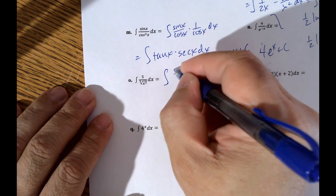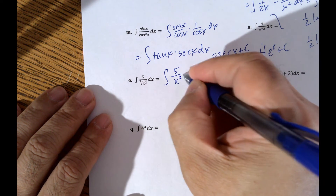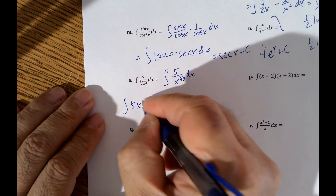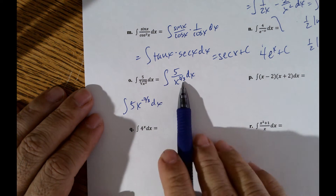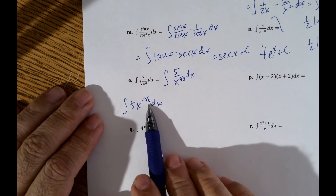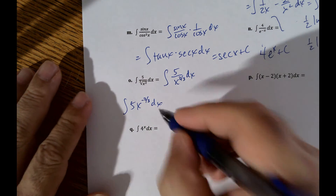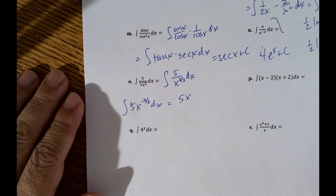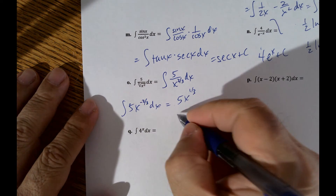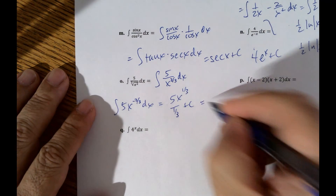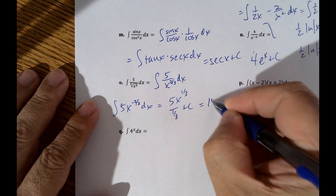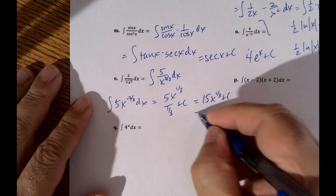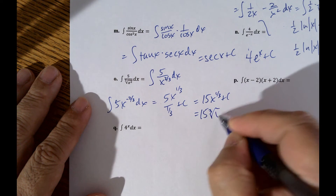Example o: rewrite 5 over x to the 2 thirds as 5x to the negative 2 thirds. Now use the power rule: add 1 to get negative 2 thirds plus 1 equals 1 third, divided by 1 third. Dividing by 1 third is the same as multiplying by 3, giving 15x to the 1 third plus C. The textbook might rewrite that as 15 times the cube root of x plus C.